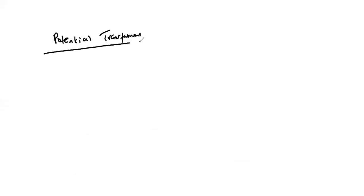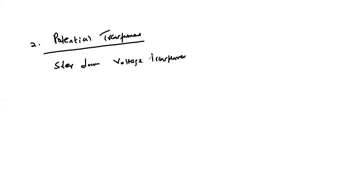Next we look at the voltage transformers in measurement of very high voltages, also called potential transformers. The function of the potential transformer is to step down the voltage to the level which the voltmeter can accommodate. Therefore this is a step-down voltage transformer that steps down the voltage to levels which can be accommodated by an ordinary voltmeter.